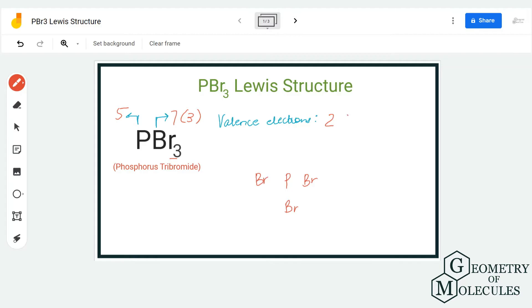We are going to get the total number of valence electrons: 5 plus 7 times 3, which is 26. So the total number of valence electrons for PBr3 is 26.